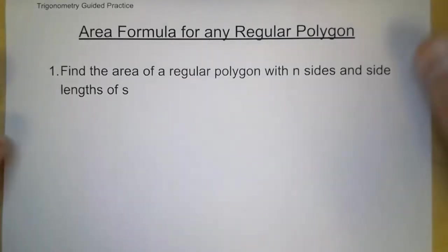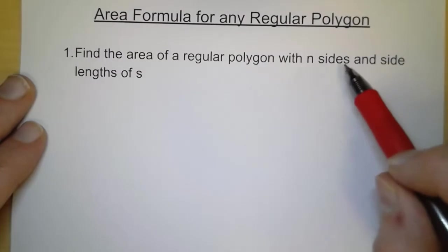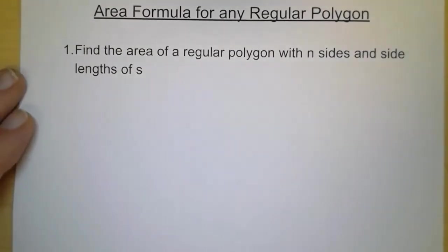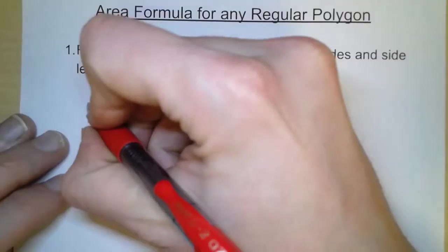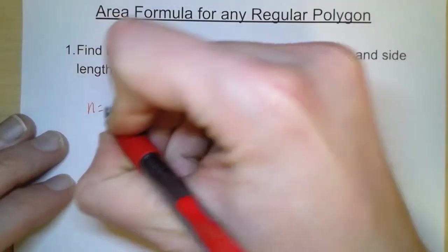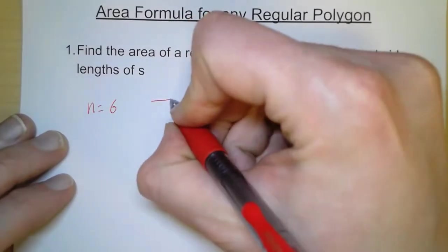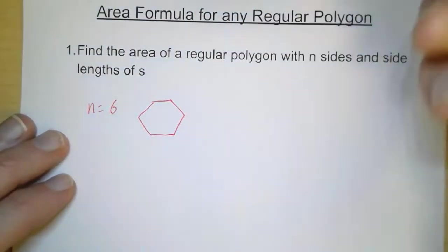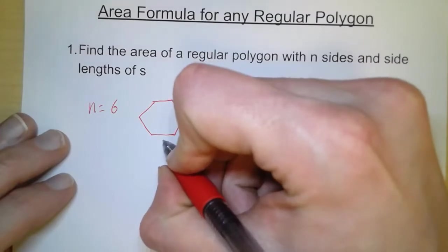With this first one we're given a polygon with n number of sides and each side has a side length of s. We could say for example that n equals 6, and so if n equals 6 that means we have a hexagon. Each side has a length of s.